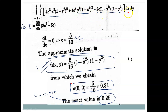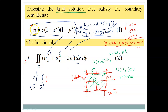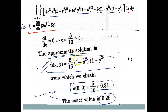We first integrate with respect to x, substitute the limits −1 to 1, then integrate with respect to y and substitute the limits −1 to 1, obtaining the value of I as an expression in c. For the extremum, we set dI/dc = 0, from which we get c = 5/16. Substituting this value of the arbitrary constant back into the trial solution gives the approximate solution.